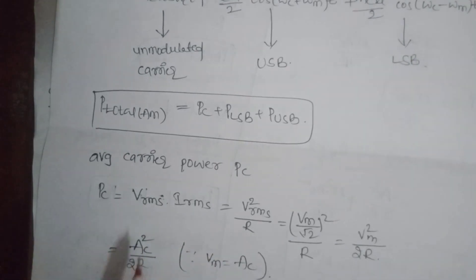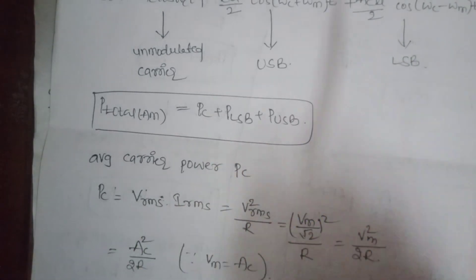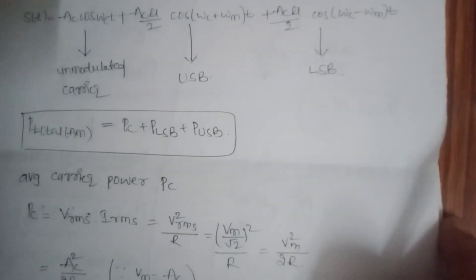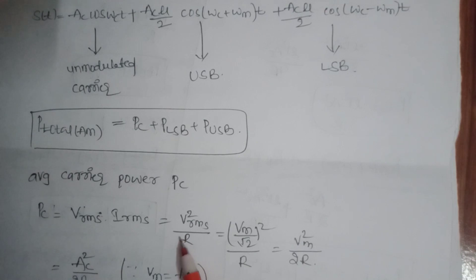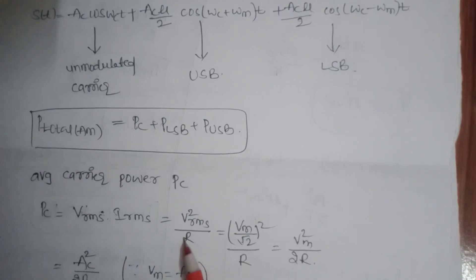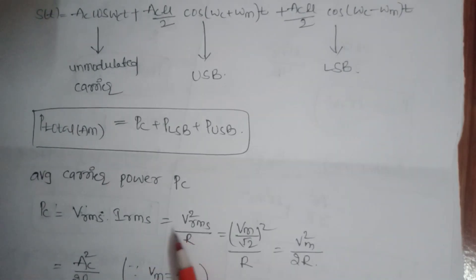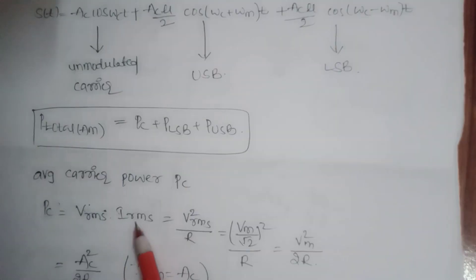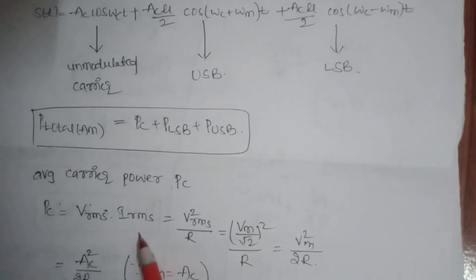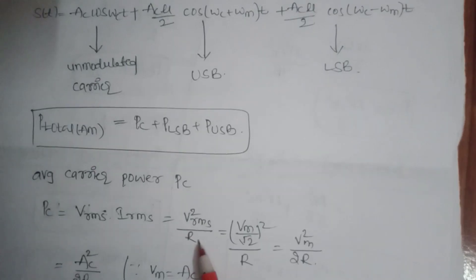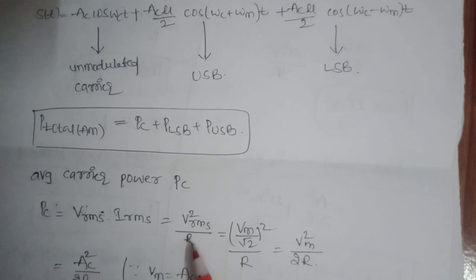Power is equal to V times I. Here we express power in terms of voltage, writing IRMS as VRMS/R. So power equals VRMS squared divided by R, where R is the impedance of the antenna.